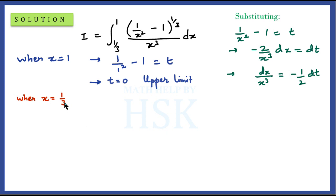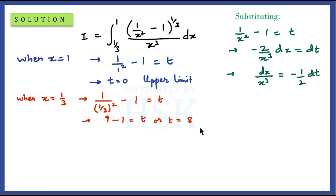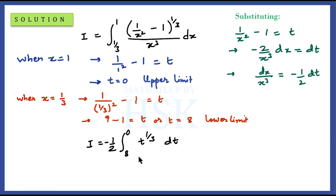Similarly, when x equals 1 by 3, we compute t equals 1 upon (1 minus 1 by 3) whole-square minus 1, which gives 9 minus 1, so t equals 8. This is the lower limit. After substitution, i is written with dx upon x-cube replaced by minus 1 by 2 dt, and (1 upon x-square minus 1) to the power of 1 by 3 replaced by t to the power of 1 by 3. The upper limit is 0 and the lower limit is 8.